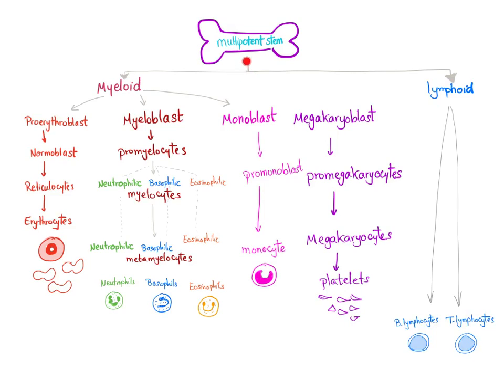These multipotent stem cells will produce a myeloid stem cell and lymphoid stem cells. The myeloid will further subdivide into four things.